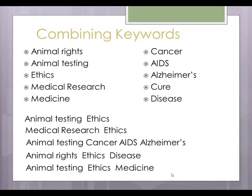For example, using animal testing or medical research in combination with ethics will give us results that perhaps have to do with the ethical ways of conducting animal experiments, or it might question whether animal testing is ethical. Animal testing combined with cancer, AIDS, and Alzheimer's will perhaps produce articles having to do with the types of tests done to find cures for these diseases. Other combinations are also possible.